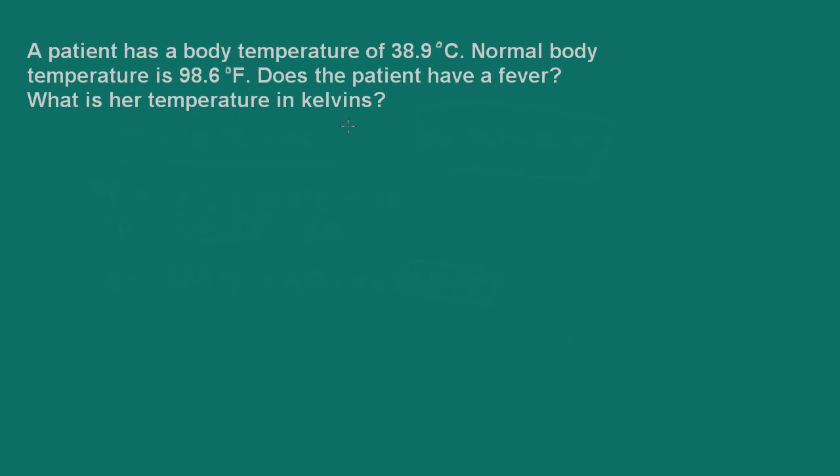A lot of you might already know that normal physiological body temperature is 37 degrees Celsius, but if you don't know that, you would have to convert the 38.9 degrees Celsius to degrees Fahrenheit in order to determine if the patient had a fever.